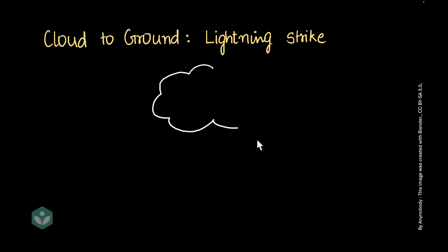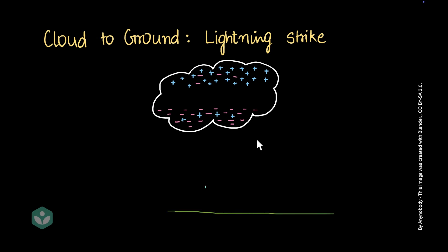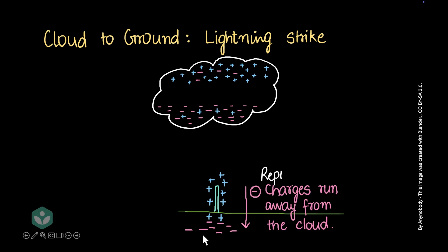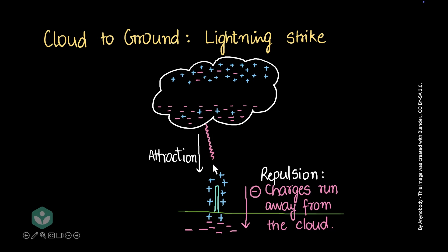Let's see how that works. You have a cloud with charges separated and here's the ground. A post on the ground has both positive and negative charges. But the large excess of negative charge in the cloud repels the negative charges on the rod, pushing them away toward the ground. Now, the remaining positive charges on the rod get attracted to the negative charges in the cloud, and vice versa. That attraction causes negative charges to move toward the pole and positive charges from the pole to move toward the cloud. When those charges meet, you have lightning — that's the flow of charges between the cloud and the ground.